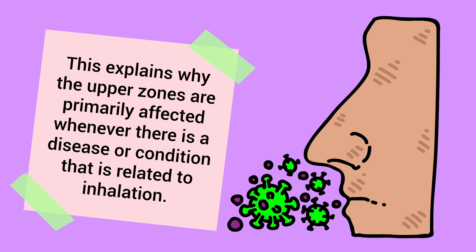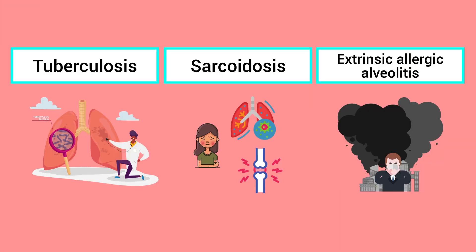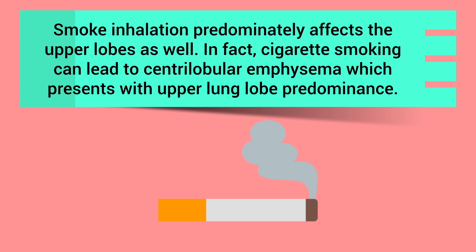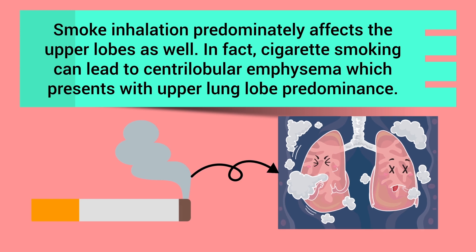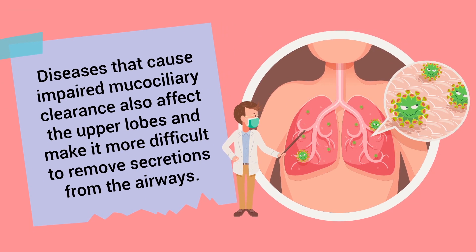Some examples include tuberculosis, sarcoidosis, or extrinsic allergic alveolitis. Smoking inhalation predominantly affects the upper lobes as well. In fact, cigarette smoking can lead to centrilobular emphysema, which presents with upper lung lobe predominance.